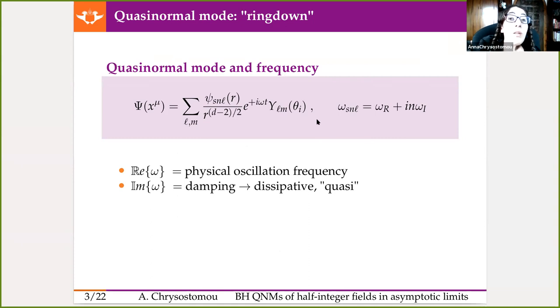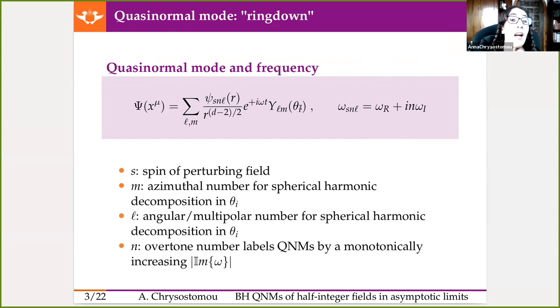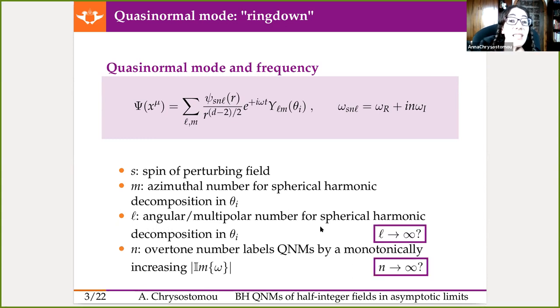From a more mathematical perspective, we can look at the quasi-normal frequency, which is decomposed into its real and imaginary parts. The real represents the physical oscillations, whereas the imaginary part represents the damping. As for the quasi-normal mode itself, that can be neatly decomposed through a spherical decomposition, where you have your radial, temporal, and angular parts. I imagine you're familiar with things like the spin, the azimuthal number, and the angular number. What might be unfamiliar is N, the overtone number, which labels quasi-normal modes by monotonically increasing value. For every L, there exists an infinite number of Ns, and these two represent the asymptotic limits of interest for us.